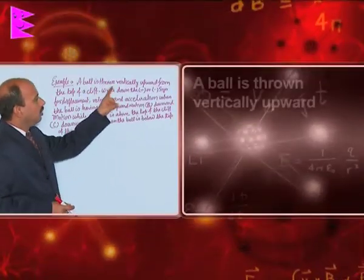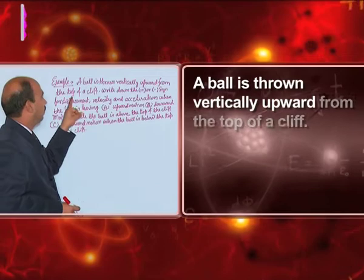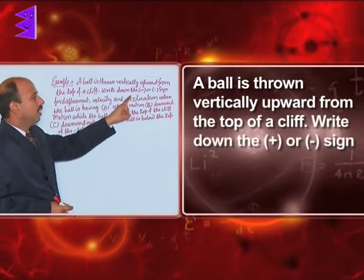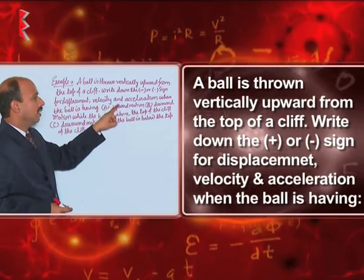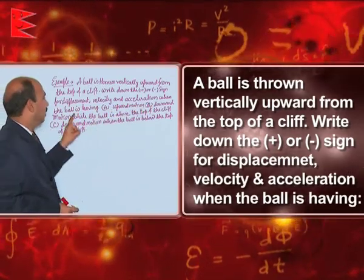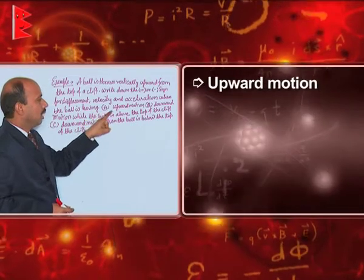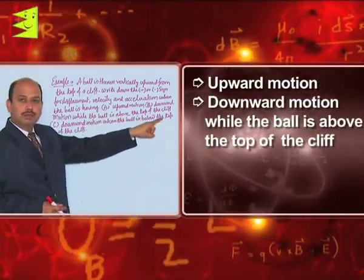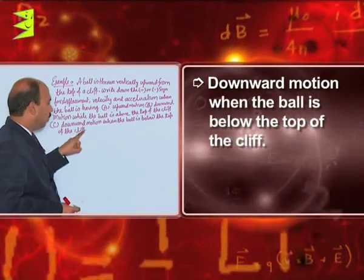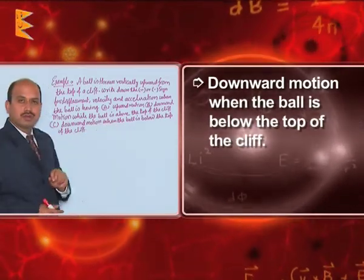The question here: a ball is thrown vertically upward from the top of a cliff. Write down the plus or negative sign for displacement, velocity, and acceleration when the ball is having (a) upward motion, (b) downward motion while the ball is above the top of the cliff, and (c) downward motion when the ball is below the top of the cliff.